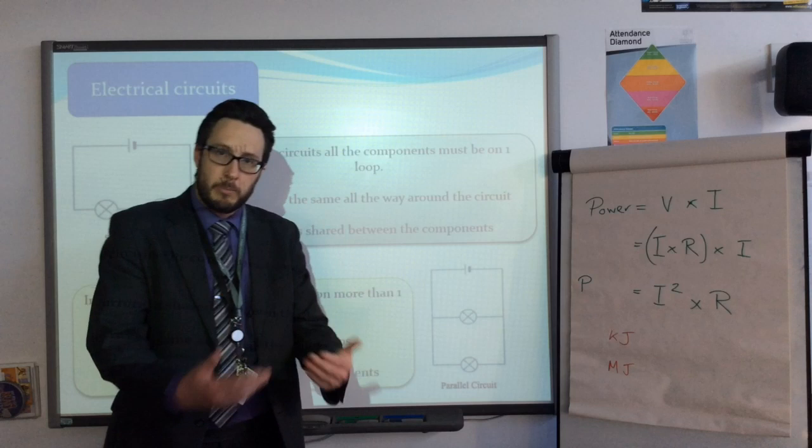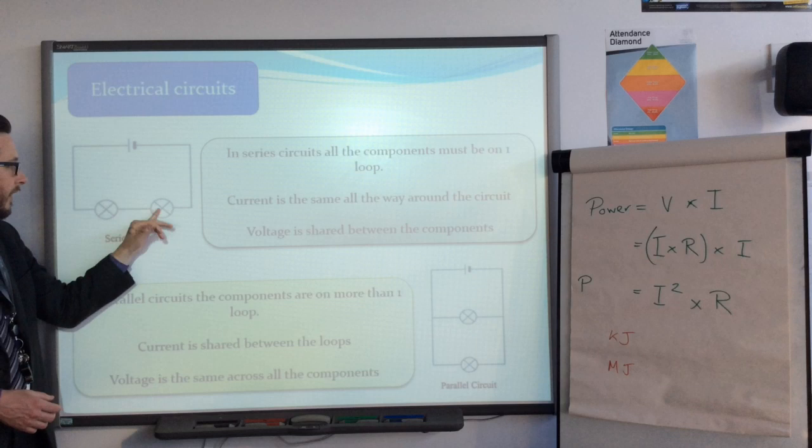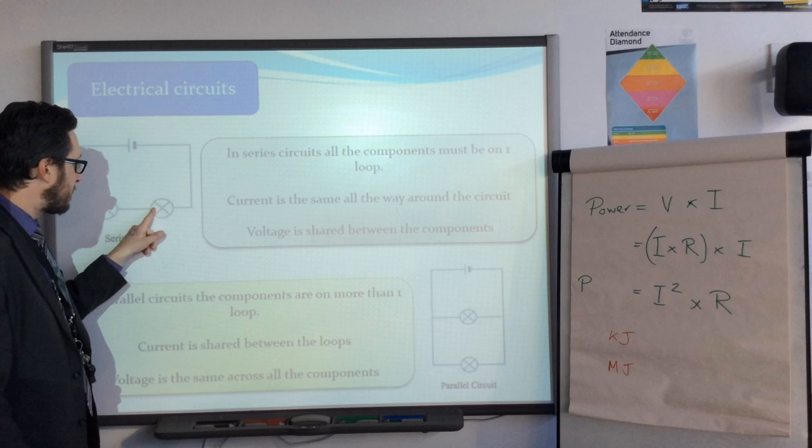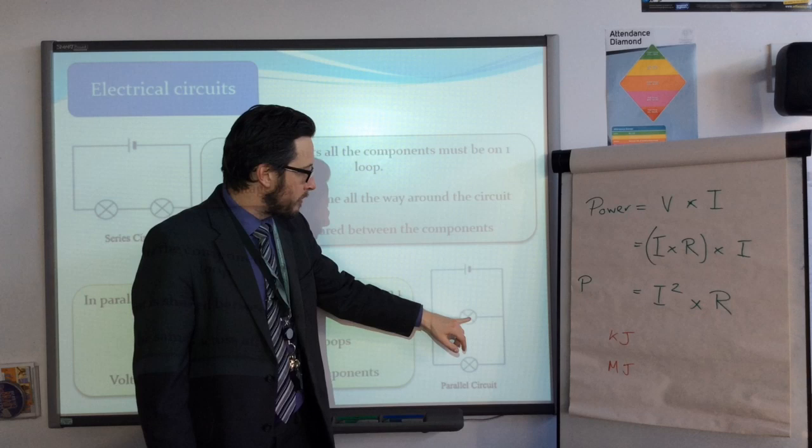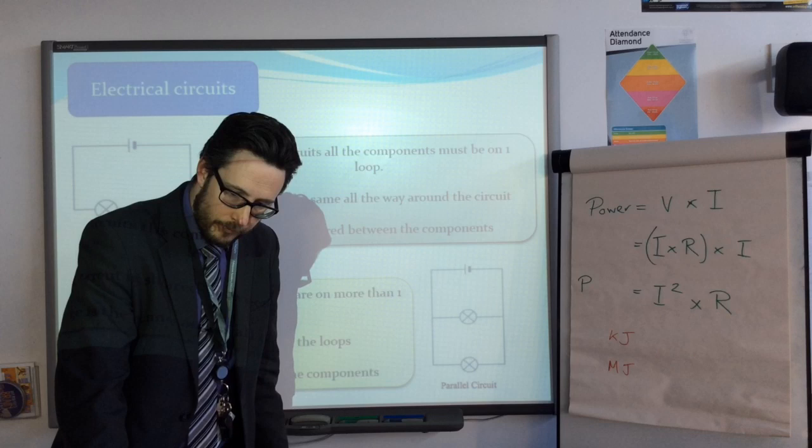Advantages to parallel circuits are because they each get the full potential difference, all of these bulbs are as bright as they should be. Whereas in series if I add another bulb the bulbs will get dimmer because they're having to share that potential difference. Similarly if there is a break in one of these bulbs in series, if one bulb blows the whole circuit stops working. Whereas in parallel if one of the bulbs breaks the other one will still light up. That's why parallel circuits are used in your home - if one bulb blows you don't want all your bulbs to go out.